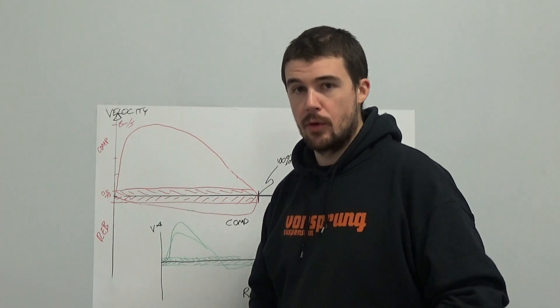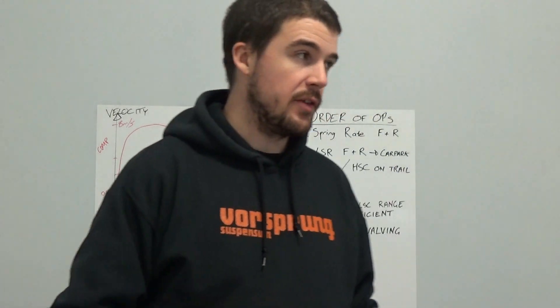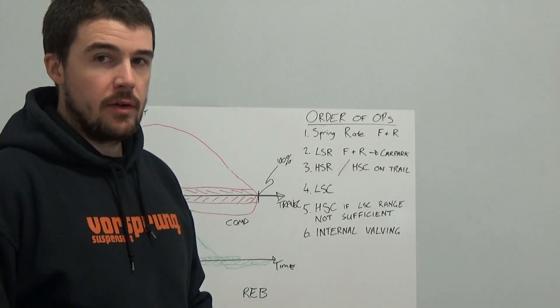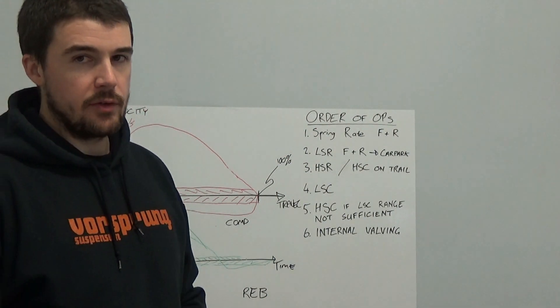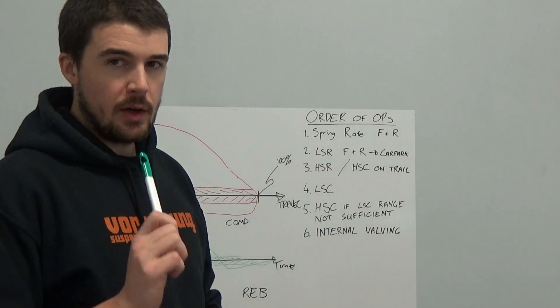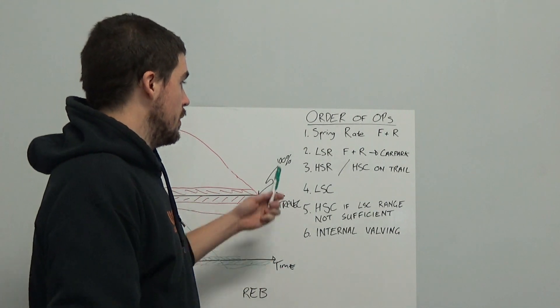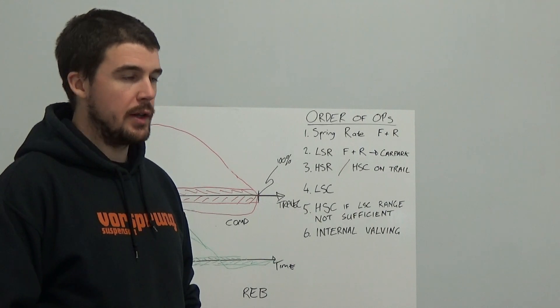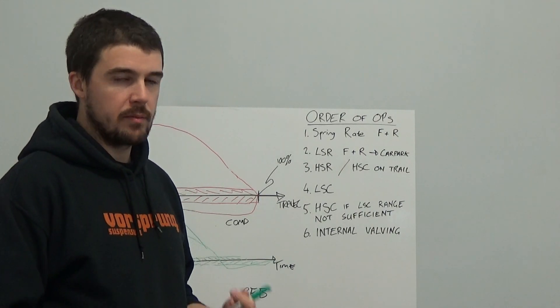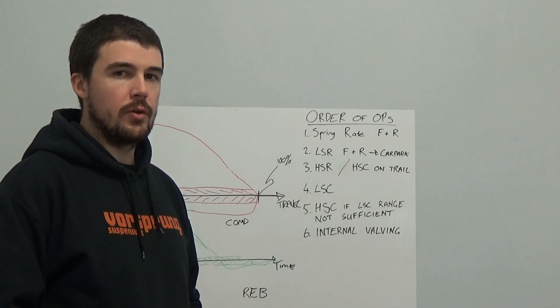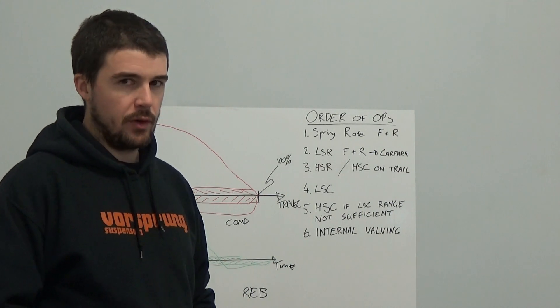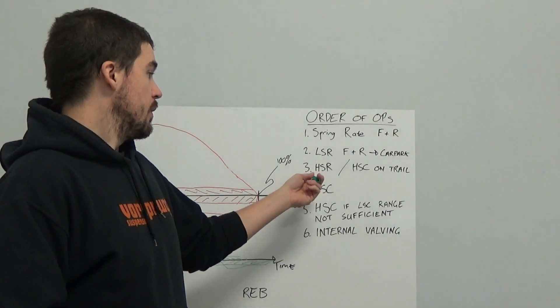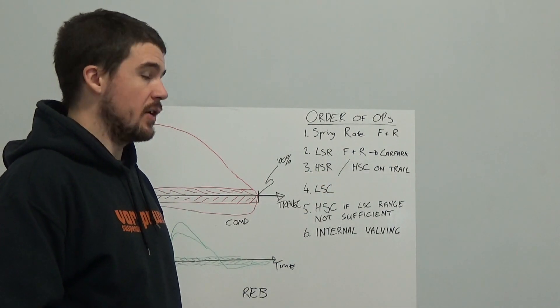So let's look at an order of operations for setting these up. My recommendation is, first of all, spring rate, front and rear. Obviously spring rate is the single most important part of your suspension setup, other than your tires. Secondly, low speed rebound, front and rear, just get a feel for it. In the car park it's fine, bouncing up and down, get something that is controlled without being excessively slow and isn't coming back like a pogo stick.